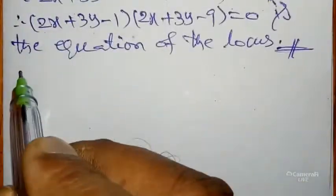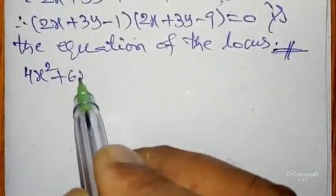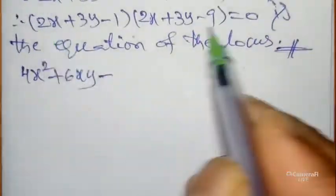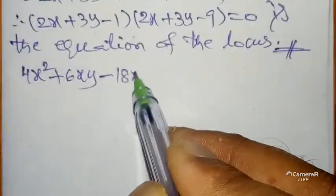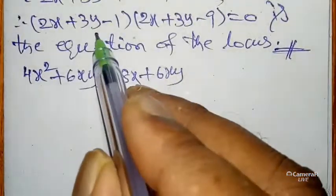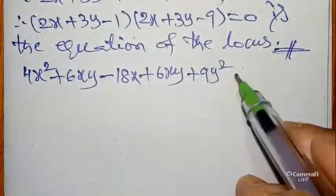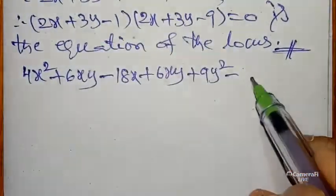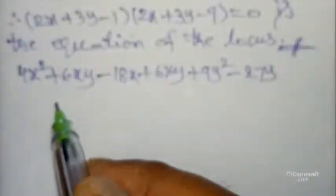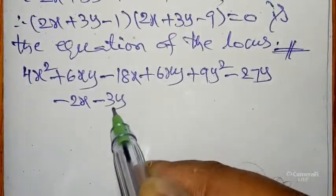2x into 2x: 2 times 2 is 4, x into x is x². 2 times 3 is 6, x into y is xy, plus into minus is minus, 2 times 9 is 18x. Next, 3y: 3 times 2 is 6, y into x is xy, plus 3 times 3 is 9, y into y is y², minus into minus is minus, 3 times 9 is 27y.